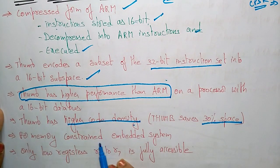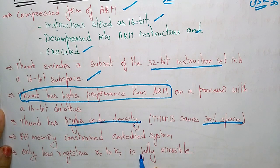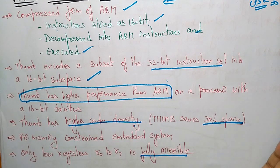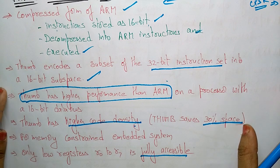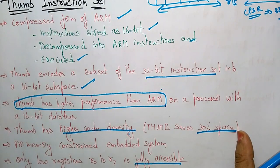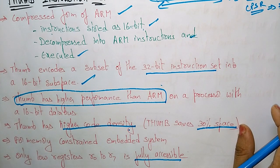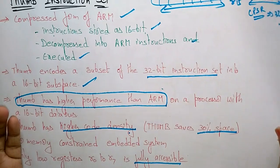For memory-constrained embedded systems with a 16-bit data bus, only the low registers R0 to R7 are fully accessible. These are the user-friendly registers that can be fully accessed by programmers.